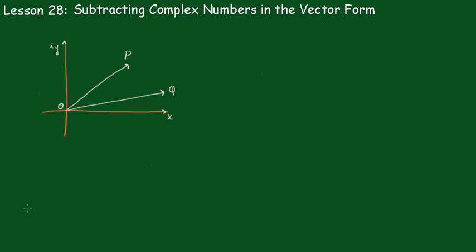Now looking at the case when these vectors originate from the origin, we're going to find out what OP minus OQ is. Now this is the same as OP plus QO, or rearranging it...